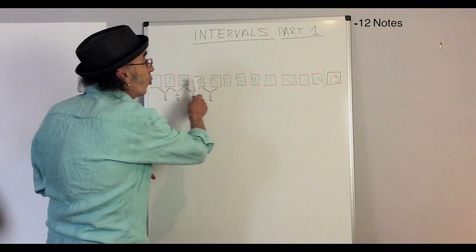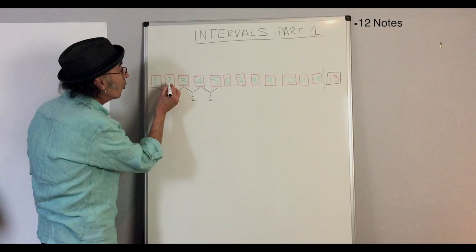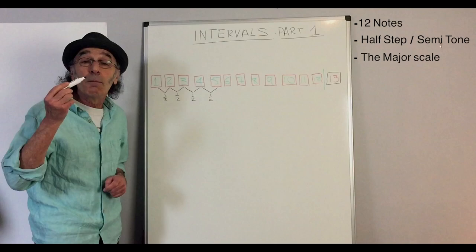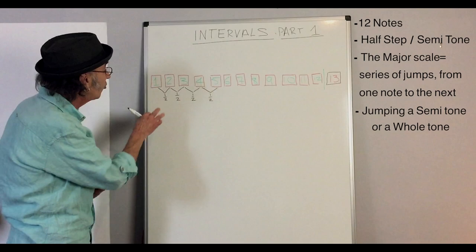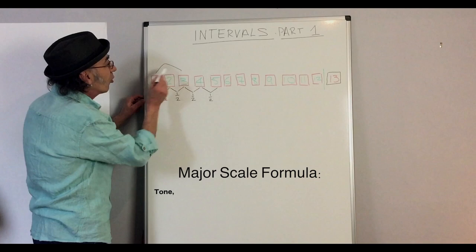So let's try and make order out of this madness. Again, we have 12 notes that we use that are building blocks. We call the distance between the notes closest to each other a half step or a semitone. The major scale that we've been talking about is a series of jumps from one note to the next, going either a semitone half step or a whole tone, which is two halves together. So the major scale looks like this.